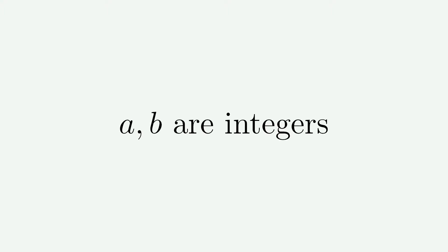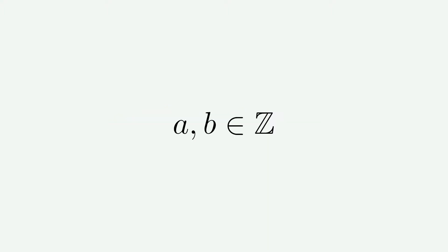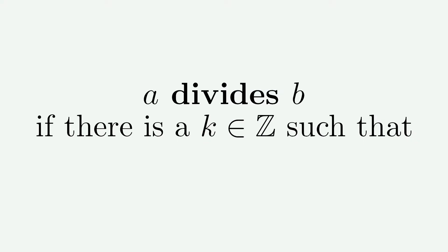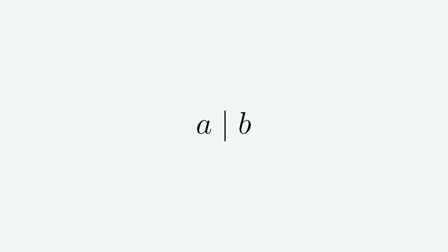Let a and b be integers. We say that a divides b if there is another integer k such that b equals k times a. We say that a is a factor of b and b is divisible by a. This is written like this and it's read 'a divides b'.